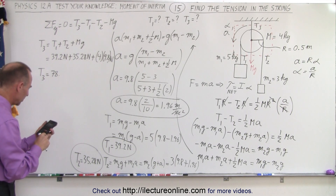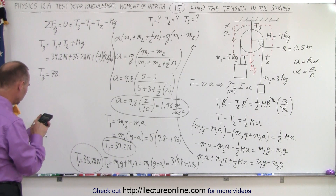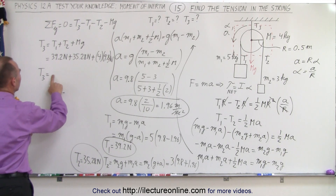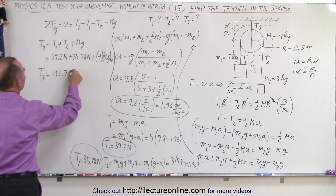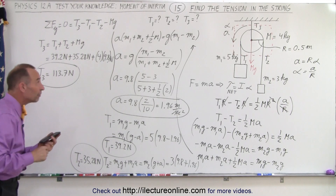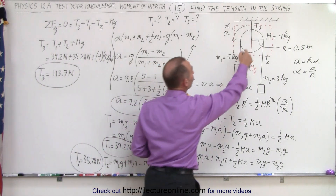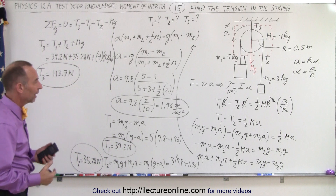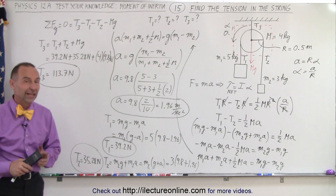Let me recalculate that. So 39.2 plus 35.28 plus 4 times 9.8 equals 113.7 Newtons. T3 is 113.7 Newtons. The reason T3 is not simply T1 plus T2 is that T3 must also hold the weight of the pulley itself. And so that's how you properly find T1, T2, and T3.